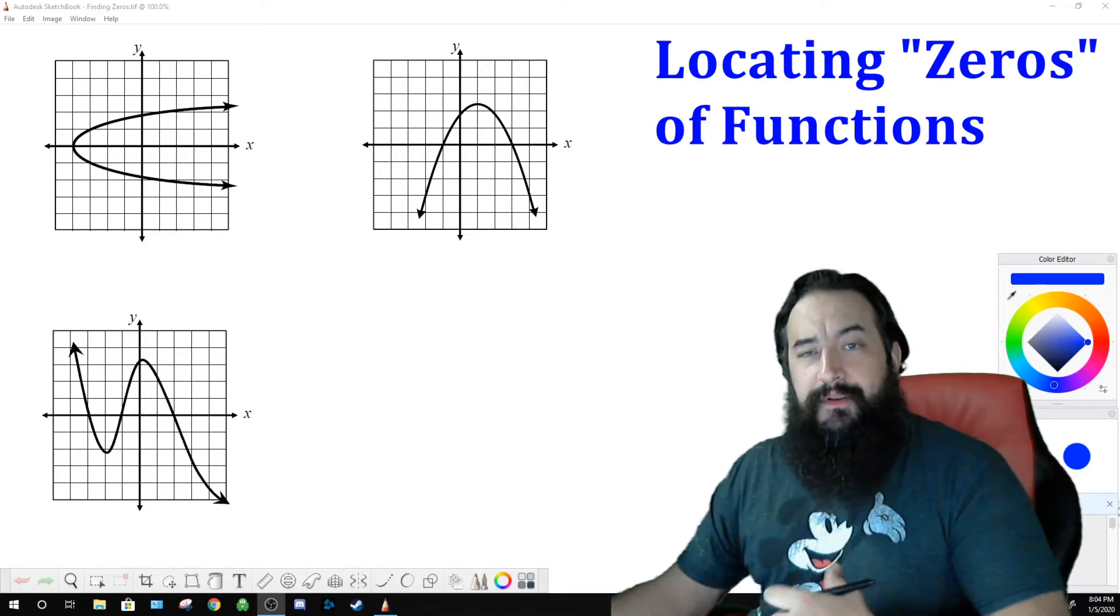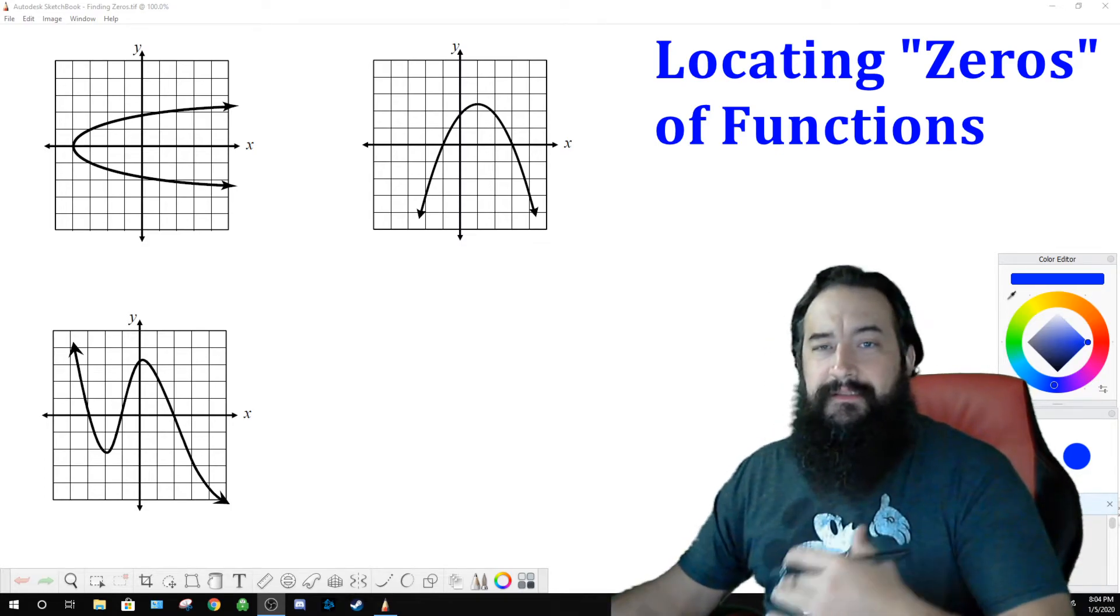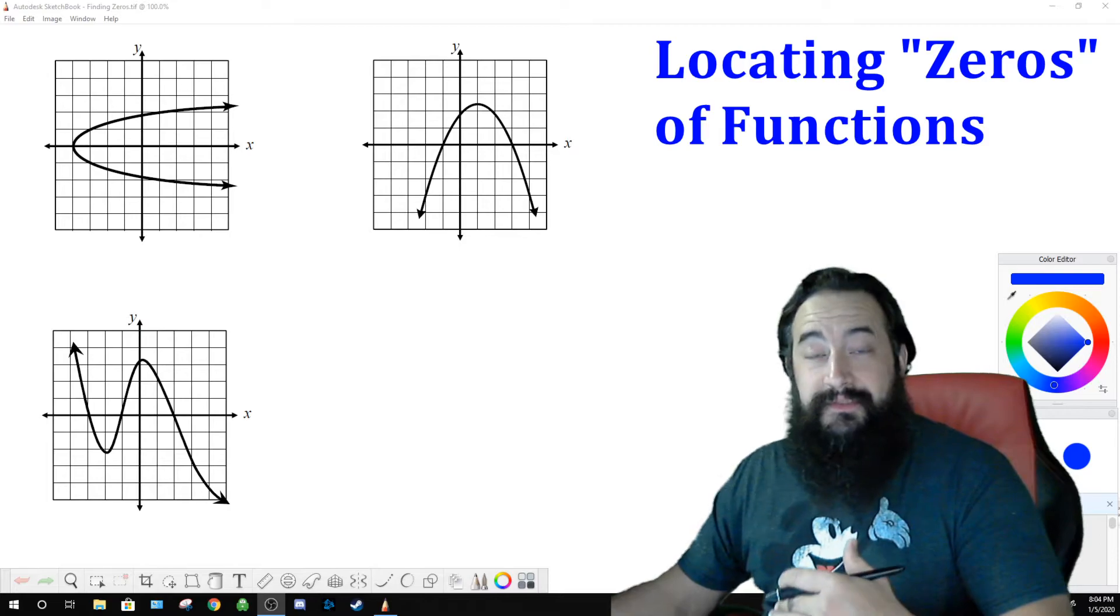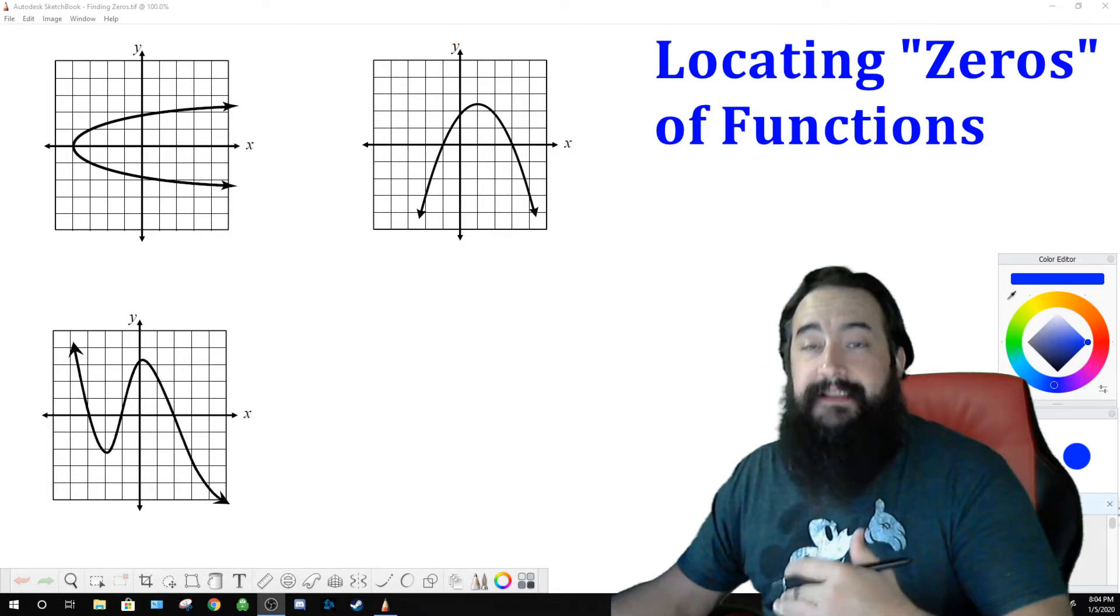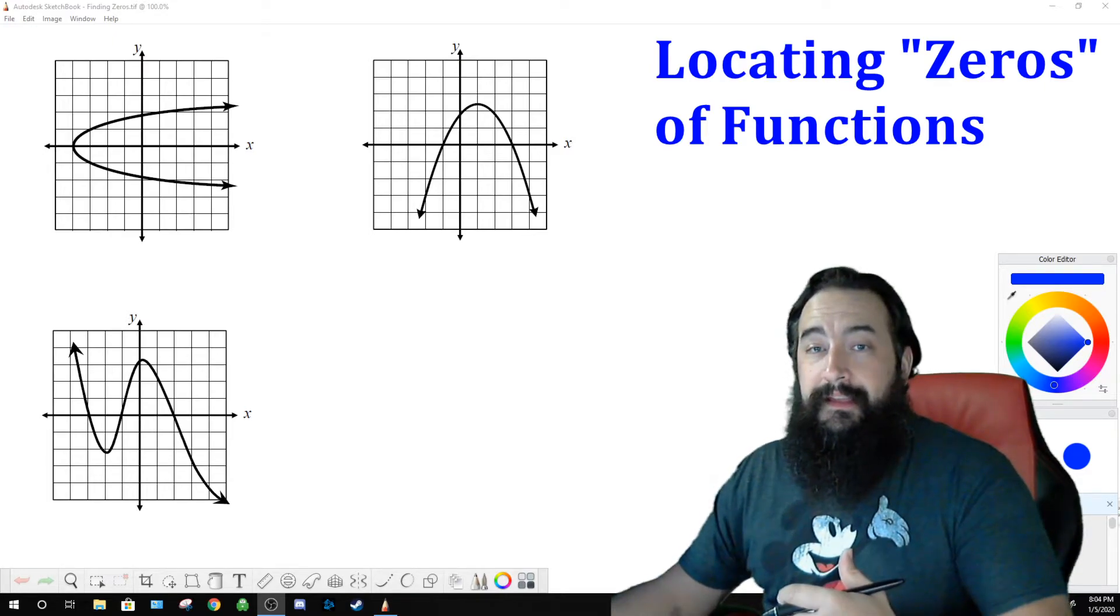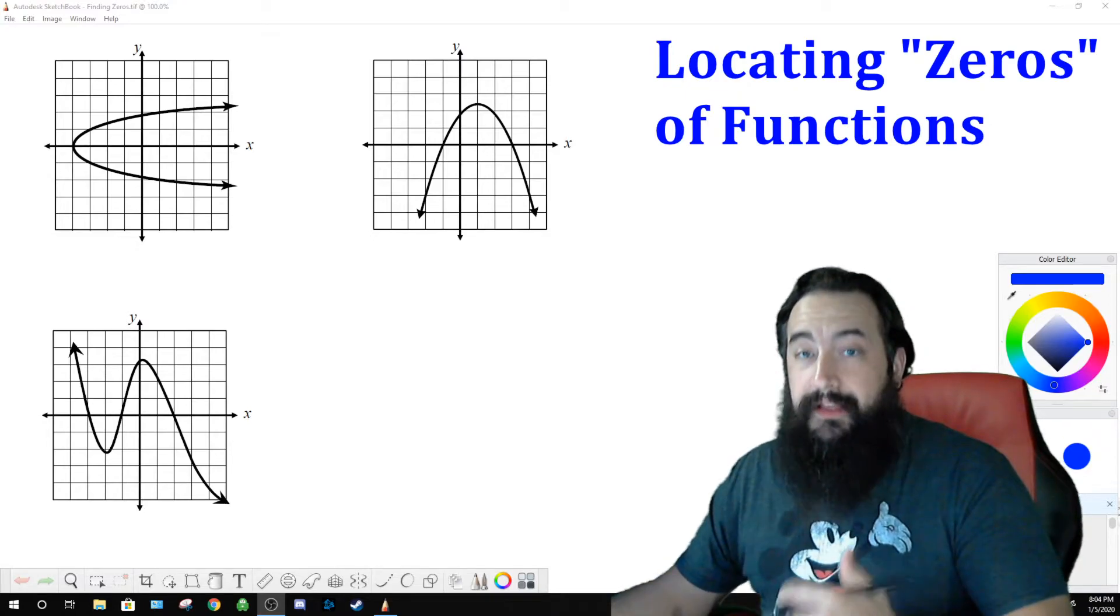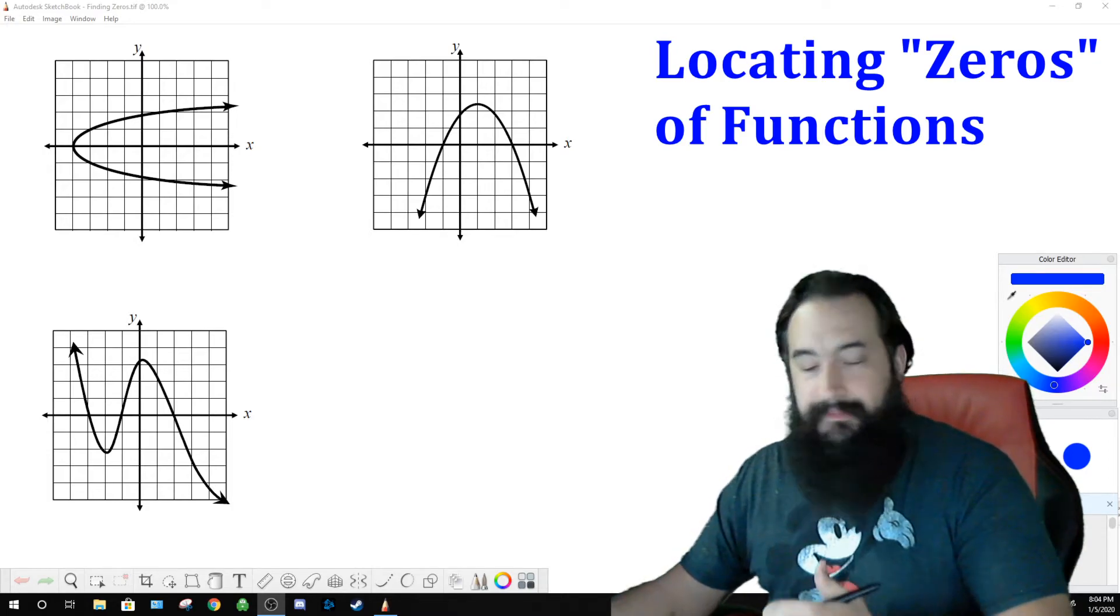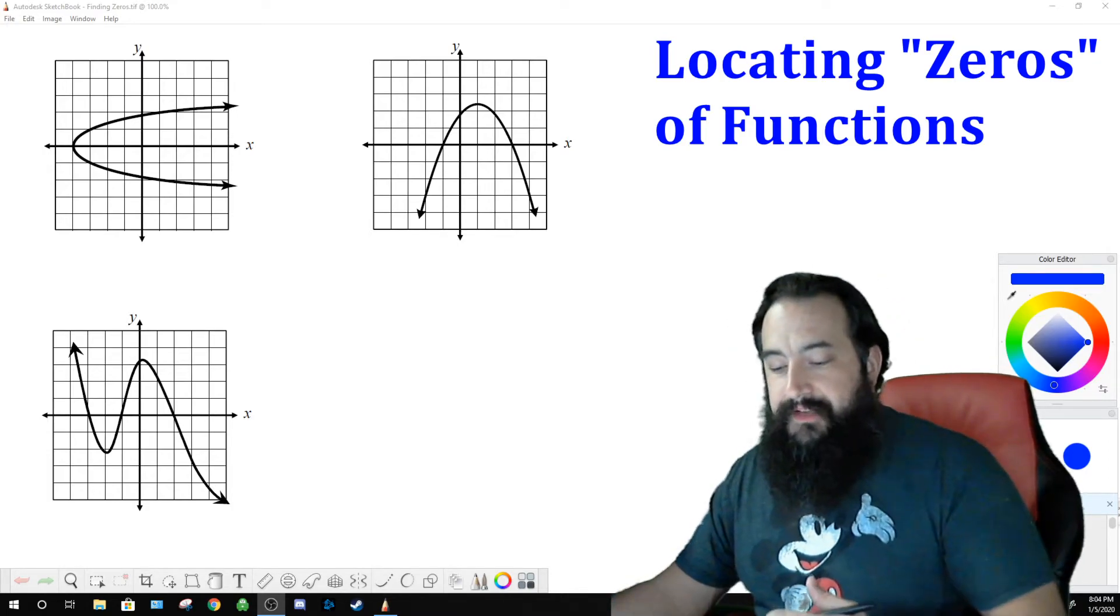It's pretty simple. So like I said before, zeros of functions are x-values where the graph is crossing the x-axis. So all you have to do is look at the graph and see where it crosses the x-axis, record the x-value there, and that is the zero, or solution, or root, or x-intercept. So here we go. There's three exercises here.